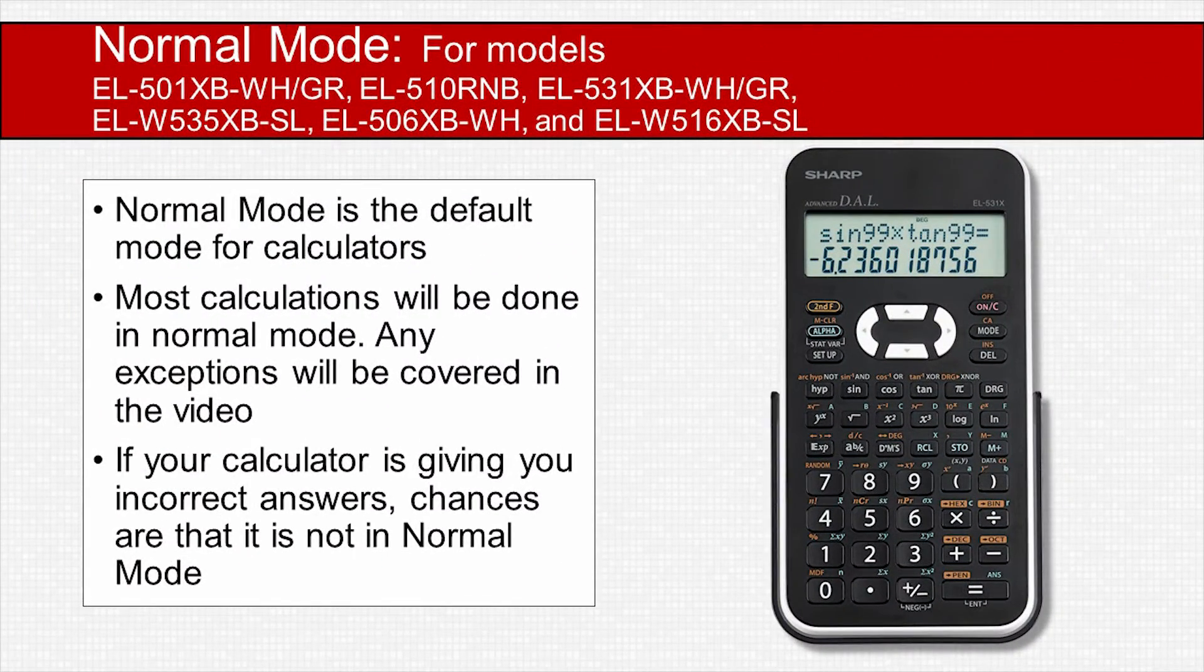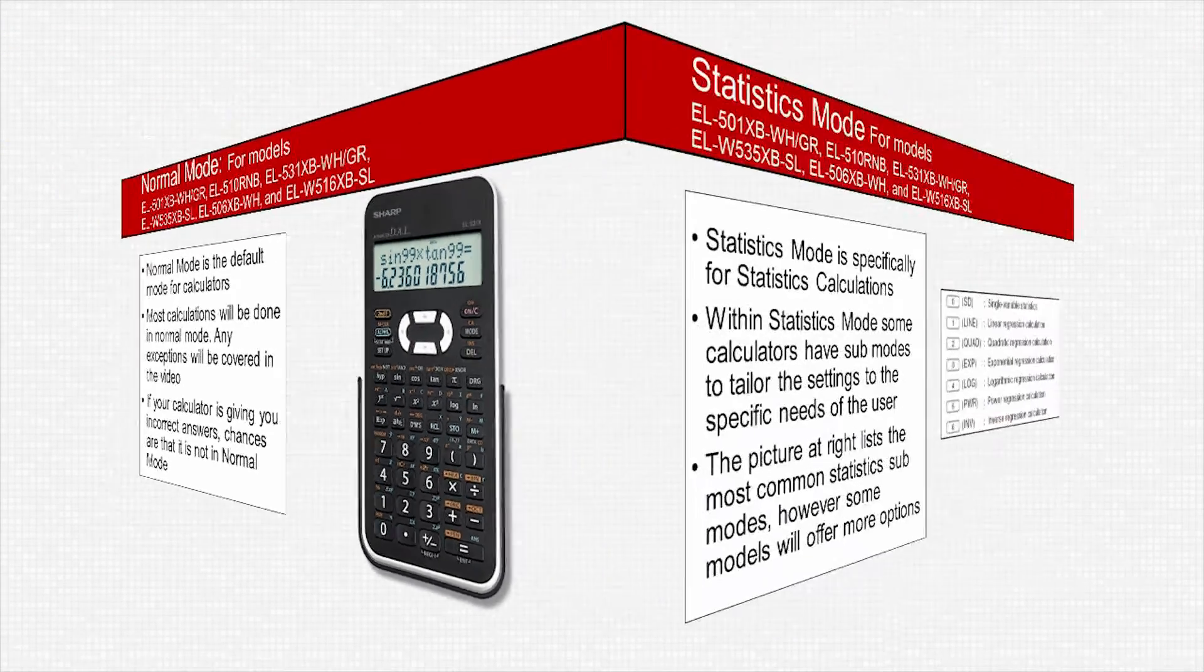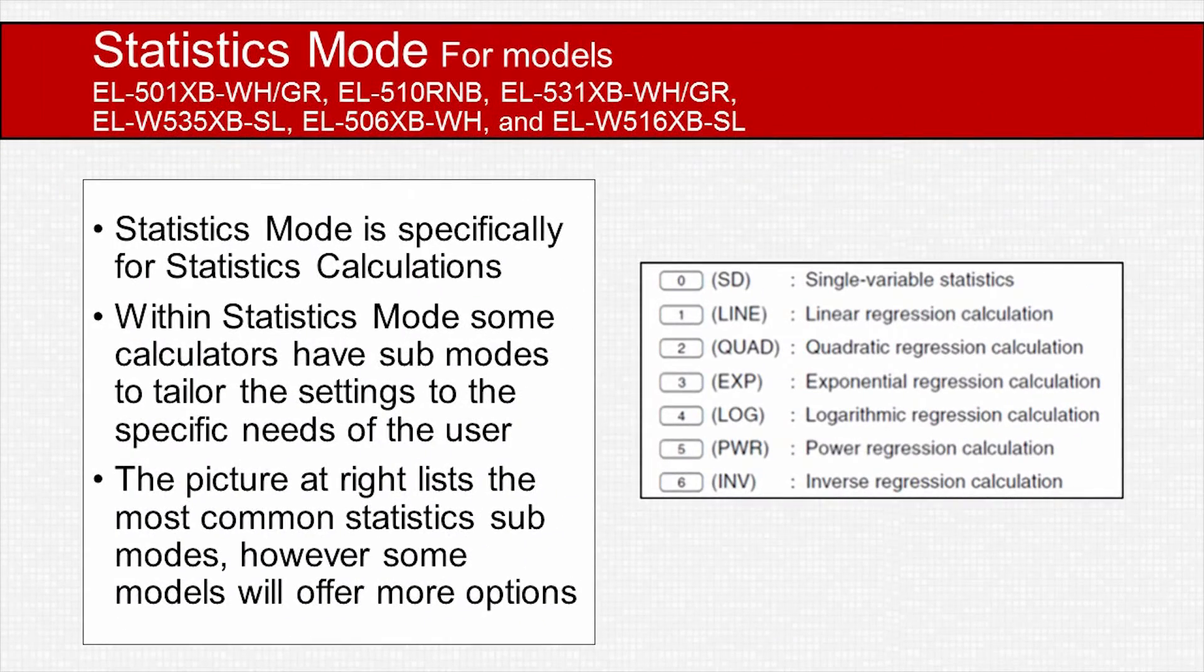Normal mode is the default mode for calculators and will cover most calculations. If your calculator is giving you incorrect answers, chances are it is not set to normal mode. Statistics mode is used for statistical calculations. Within statistics mode, the calculator may have sub-modes that can further tailor the calculator settings to the needs of the problem. The number of sub-modes varies by calculator model.